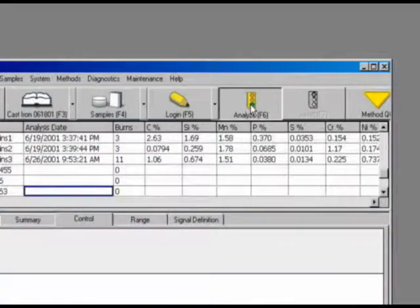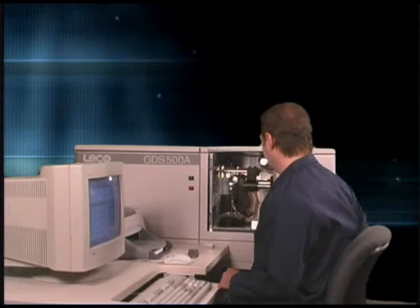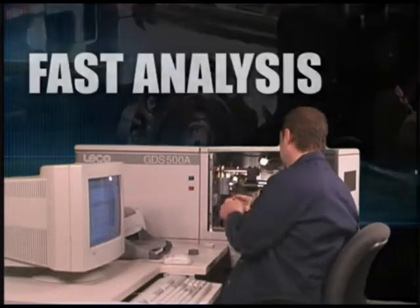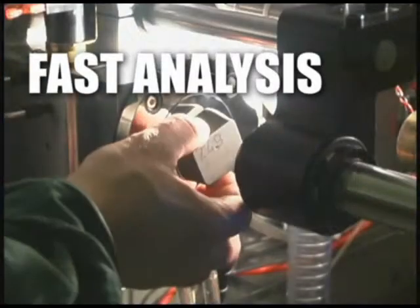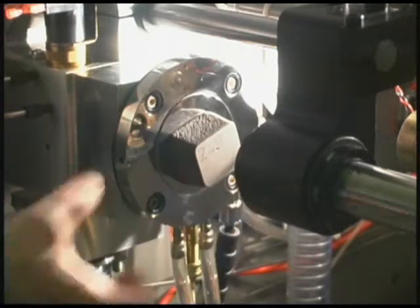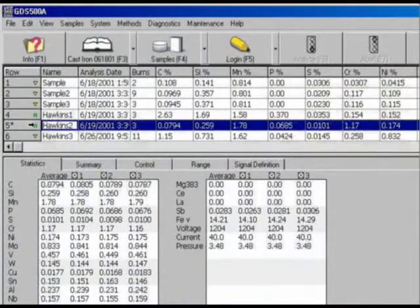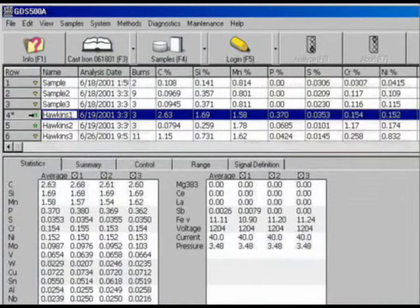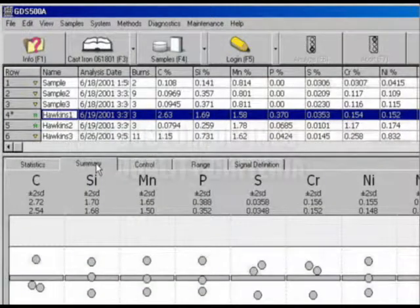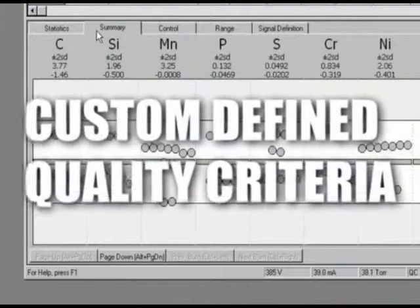To perform an analysis with the GDS500, the operator selects the desired method, loads the sample, and closes the door. The analysis begins automatically. During the analysis, the software displays the analysis status and lamp conditions. The final results are displayed and can be printed and transmitted automatically at the end of the analysis.